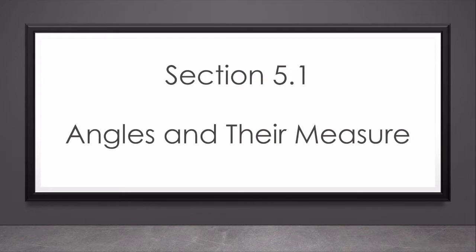Section 5.1 is about angles and their measure. This section primarily focuses on converting between degrees and radians and minutes and seconds, finding arc length, area of a sector, and things like that.